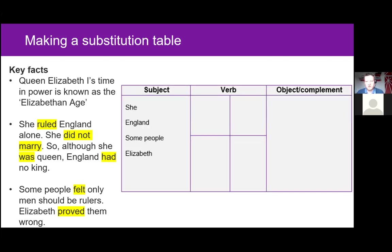We can add the subject first. In the second sentence 'she' is used twice, then we have 'England' as a subject in one clause, 'Elizabeth,' and 'some people.' Because our table only includes subject, verb, and object, we're excluding the 'so although' part of the sentence — 'so although she was queen' — because it doesn't fit our structure and would cause confusion. So we include these subjects.